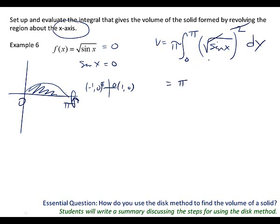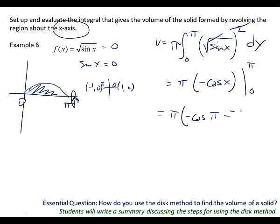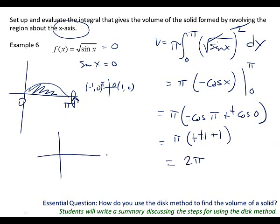What do we get when we integrate sine x? Negative cosine x. This time be careful — zero matters when we have trig. We've got pi times negative cosine pi minus negative cosine zero. Double negative goes positive: cosine pi is negative one so we get positive one; cosine zero is one, double negative goes positive two. Answer: two pi.